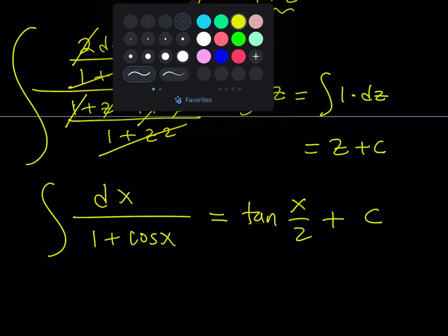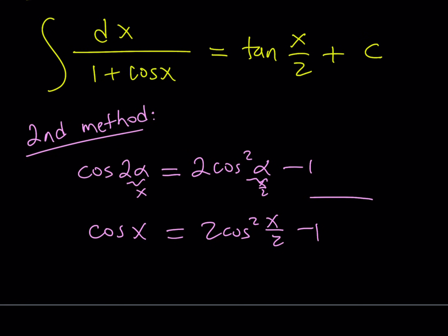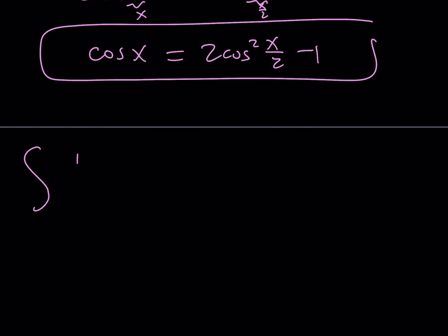Let's use our second method to solve this problem. Since you've been through the painful method, you deserve to see the less painful method. Anytime you see something like 1 plus cosine x or 1 minus sine x, you should think about double angle formulas. Cosine of 2 alpha can be written as 2 cosine squared alpha minus 1. If you replace 2 alpha with x, then alpha is x over 2. So cosine x equals 2 cosine squared x over 2 minus 1. That's super-duper helpful.